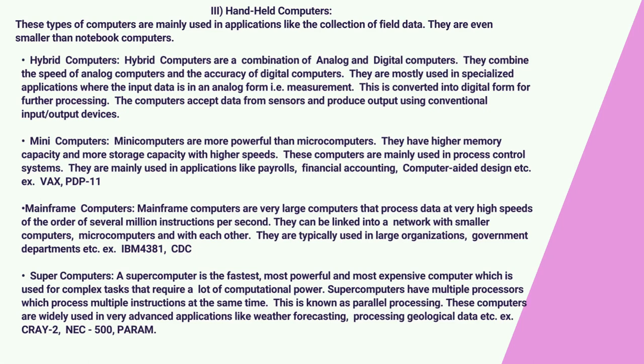A supercomputer is the fastest, most powerful, and most expensive computer, which is used for complex tasks that require a lot of computational power. Supercomputers have multiple processors which process multiple instructions at the same time — this is known as parallel processing. These computers are widely used in very advanced applications like weather forecasting, processing geological data, etc. Examples include Cray 2, NEC 500, and PARAM.